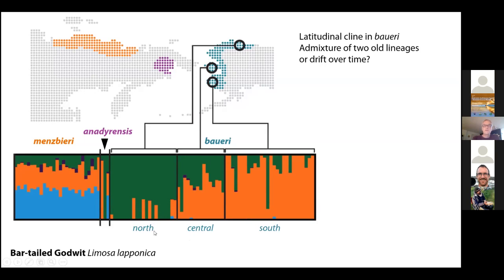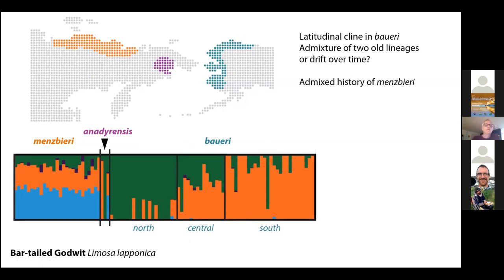This latitudinal cline also links to clines in size, plumage, and timing within the subspecies, so there is isolation by distance within this subspecies. On the left, Menzies Bay seems to be a more recent admixed population of the western populations and the Alaska lineages. A big question was the population of anadyrensis — a very small, mysterious population whose wintering range is unknown. From the three high-quality samples I analyzed, one looks like southern boweri, one like northern boweri, and one like Menzies Bay.